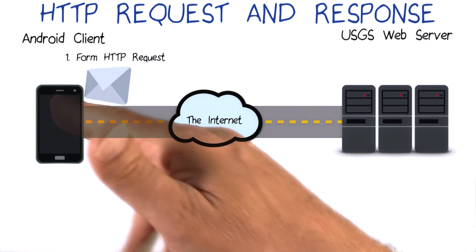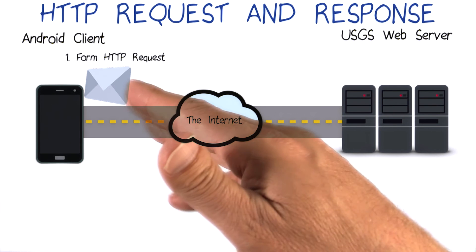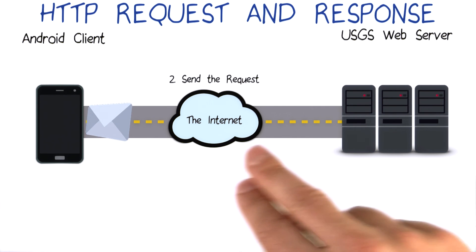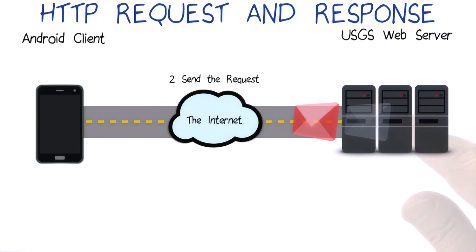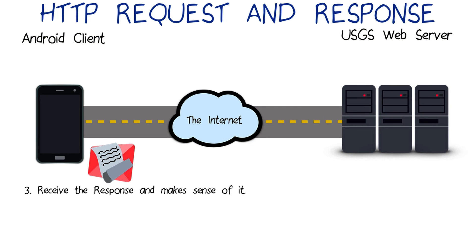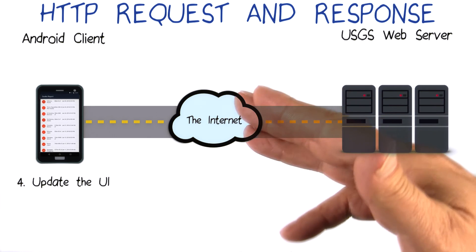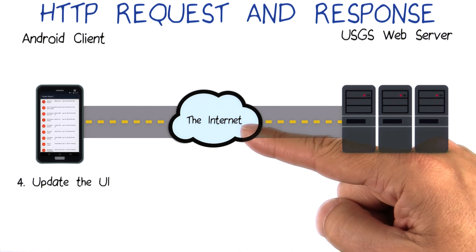First, we'll talk about how to form a proper HTTP request based on the information we want and from where we want to get it. Second, we'll send the request to the server, which will process it and figure out a proper response to send back. Third, we'll talk about how the client can process or parse this response and convert it into a format that it understands. Then lastly, we can update the UI on our app to show the results to the user.